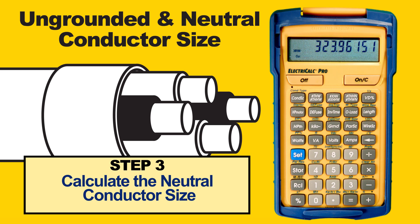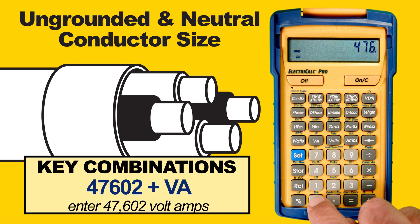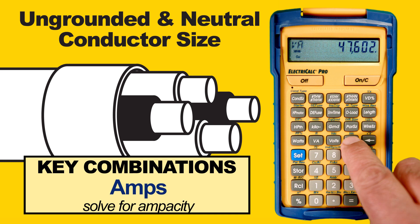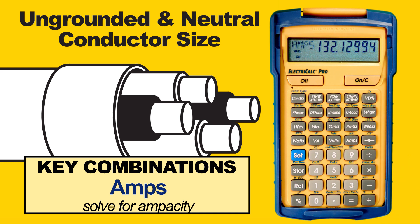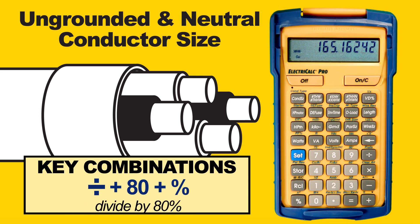The third step is to calculate the neutral conductor size. The book gives the neutral load as 47,602 volt amps, so we enter 47602 and press the Volt Amp button. To solve for the ampacity, we press the Amps key one more time and we see 132 and change. Adjusting for the wire duration, we need to divide that by 80% — we press Divide, 80, then Percent. The answer is 165 amps for the neutral conductors.